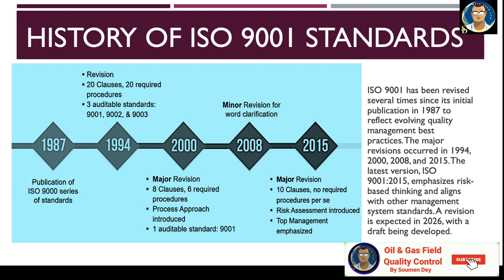In 1994, the first big revision came with 20 clauses, 20 required procedures, and three auditable standards: 9001, 9002 and 9003. In the year 2000, a major revision came with reduced 8 clauses, 6 required procedures, and the process approach was introduced. A minor revision came in 2008 with some word clarifications also introduced in that section.